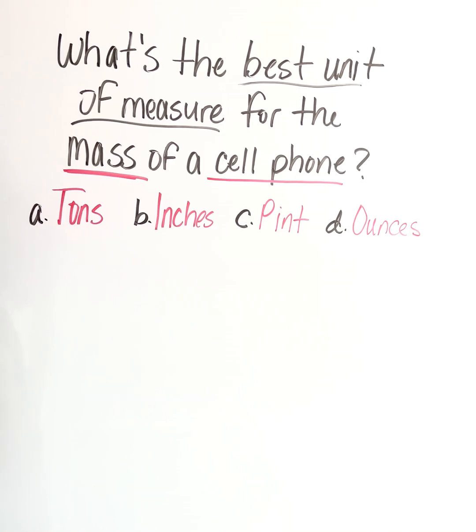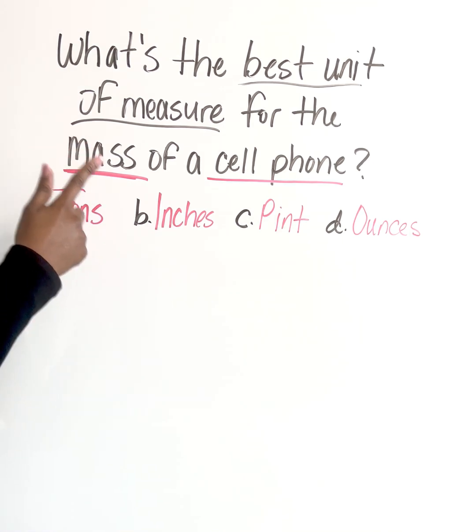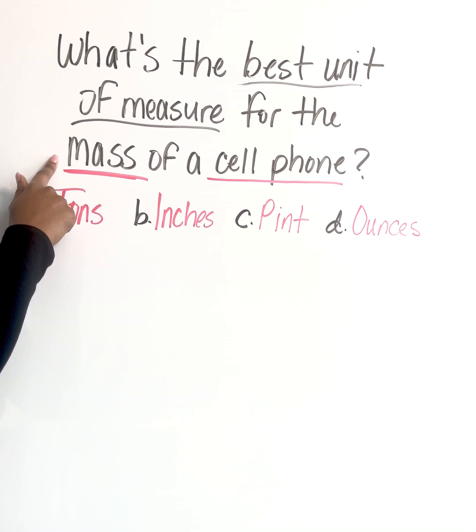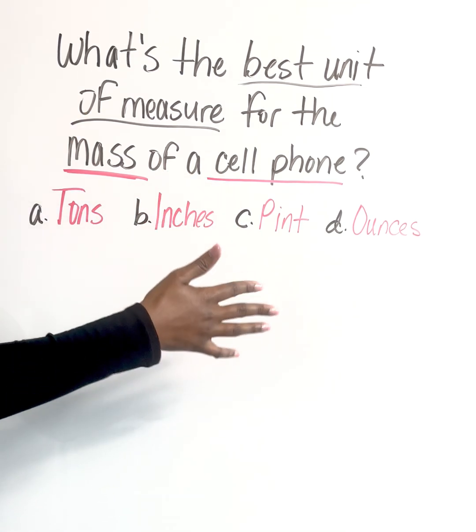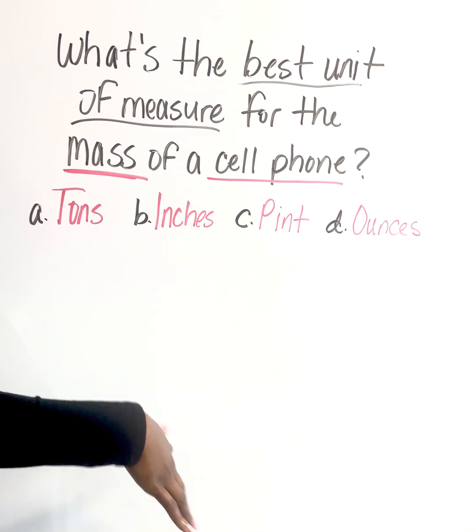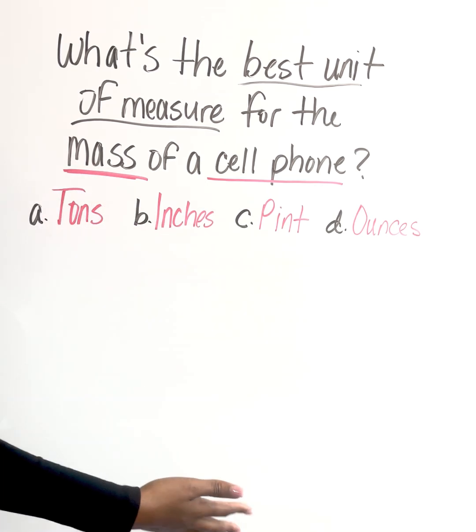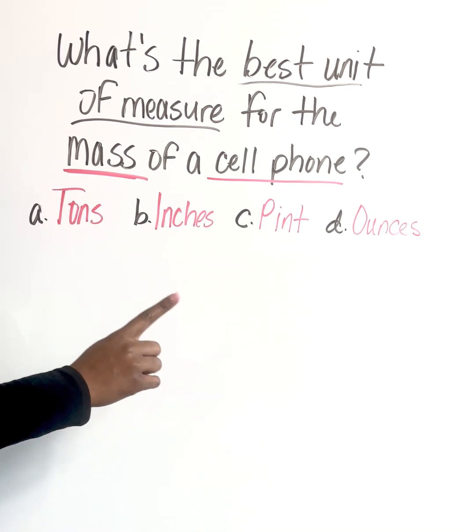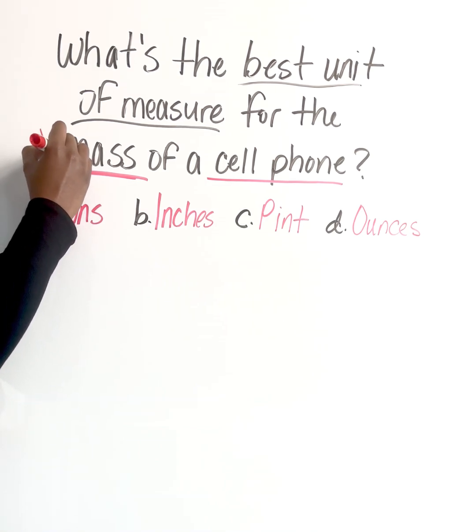Now we understand what they're asking us. They want to know what can we best use to measure the mass. Mass, of course, is going to represent weight of a cell phone. A cell phone is a common object that we all use on a daily basis. So that's our first step, identify a unit of measure. We know it's the mass.